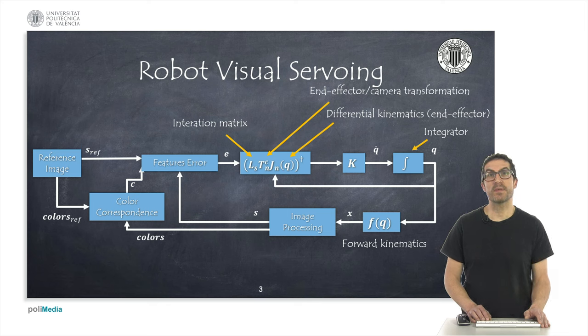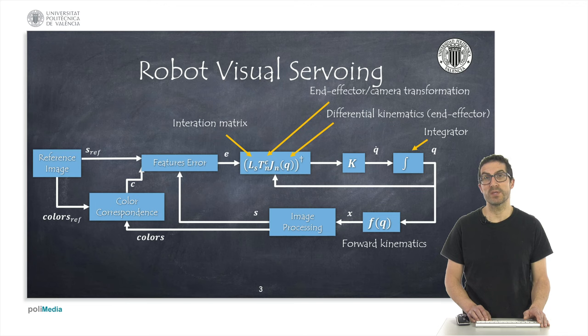This diagram represents the required robot visual servoing control structure. We need a reference image, a set of reference features and a list of features colors, information about the reference features. On the other hand,